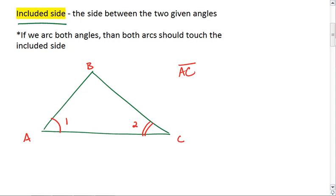And a quick way to check that is to look at the two angles you are given. Angle 1, its arc touches sides AB and AC. Angle 2, its arc touches sides BC and AC.